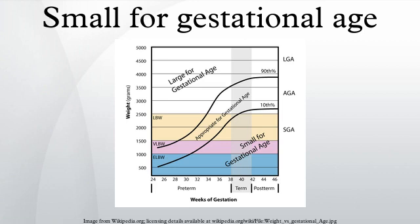As for causes, being small for gestational age is broadly either being constitutionally small — wherein the state is essentially a genetic trait of the baby — or intrauterine growth restriction, also called pathological SGA. The risk factors and etiologies of pathological SGA can be broadly divided into three categories: fetal, maternal, and placental.